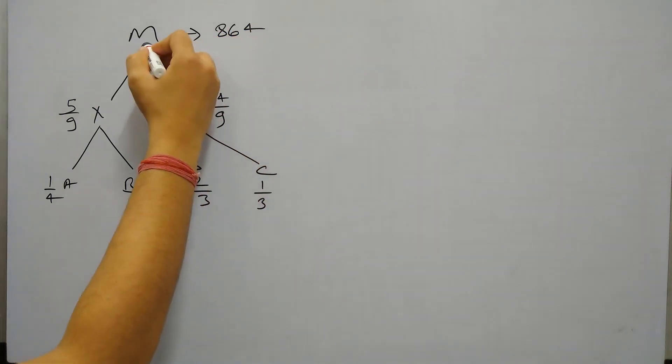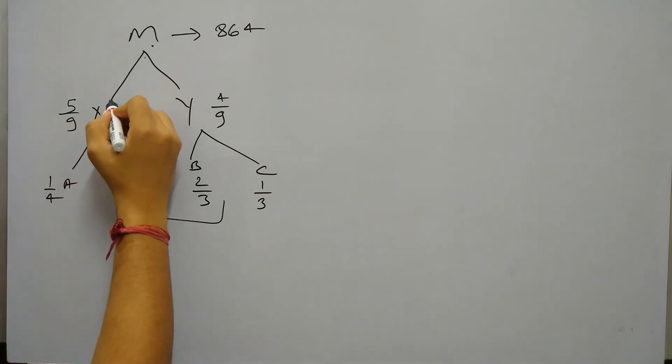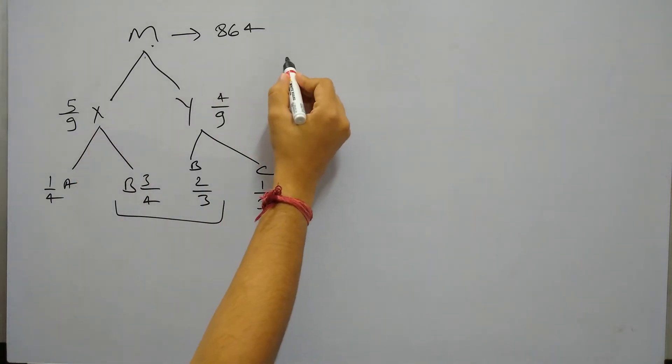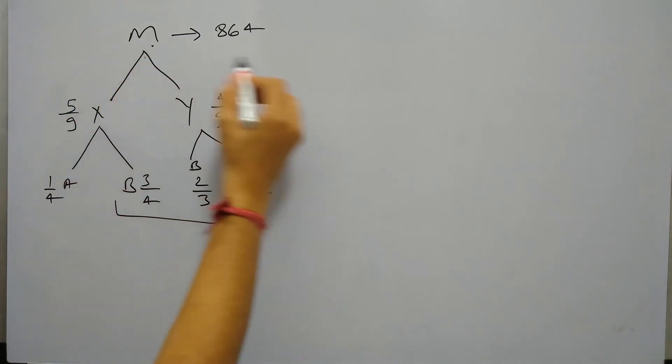So we need to find out in this mixture how much is B. So B is total this much: 3/4 and 2/3. So if we see in component X, component X is 5/9 times M, M is 864.